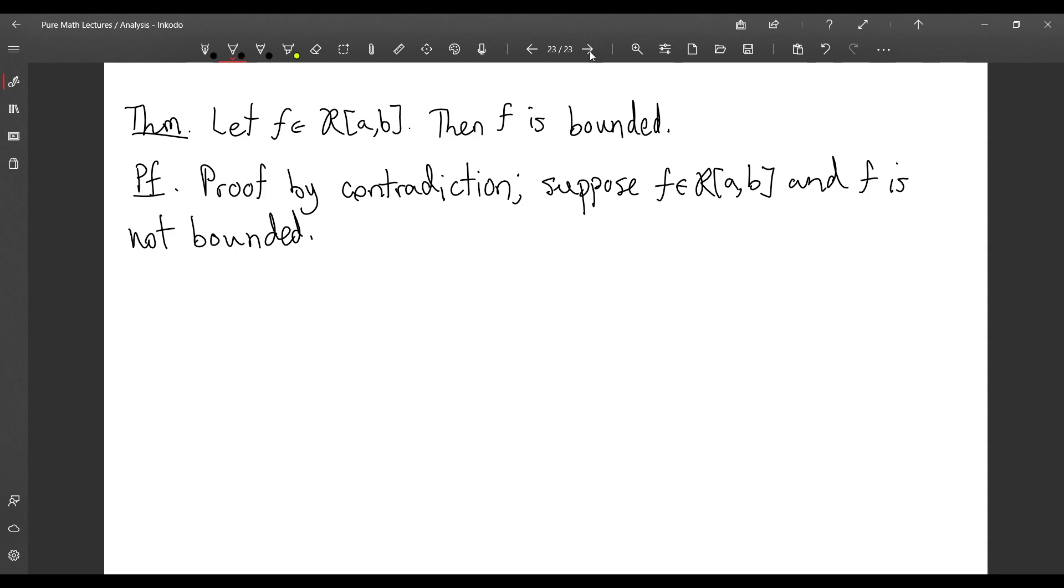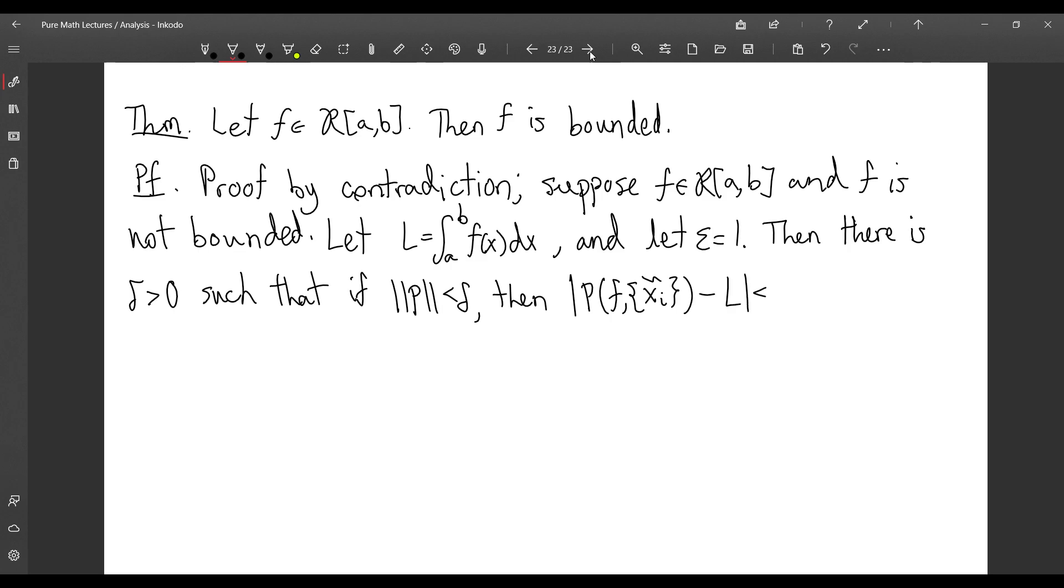Suppose that f is Riemann integrable on the interval [a,b] and f is not bounded. Let L be the Riemann integral and we're going to let epsilon be equal to 1. Then there is δ > 0 such that if P is a partition with mesh less than δ, then